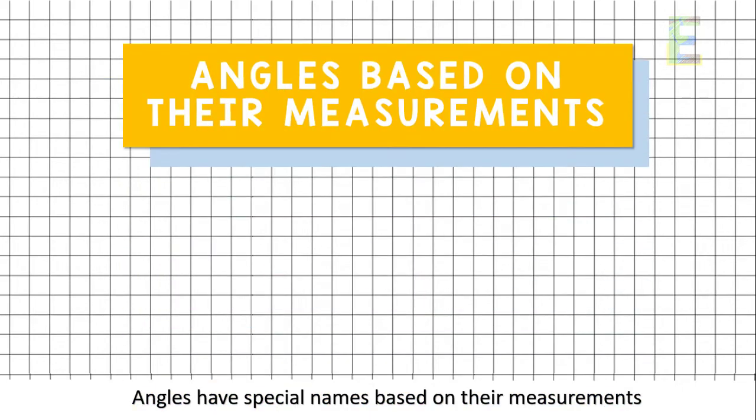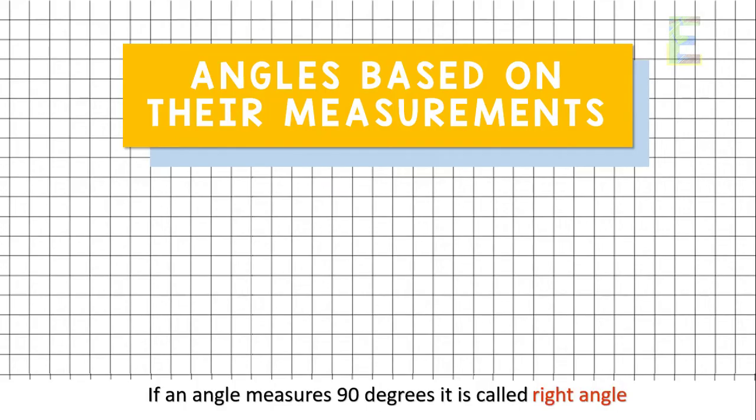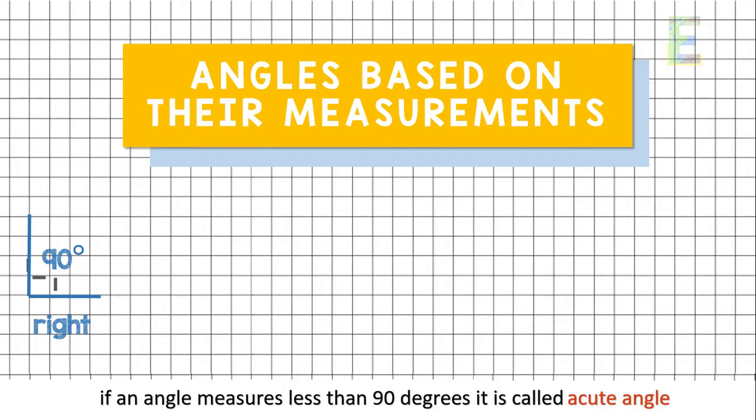Angles have special names based on their measurements. If an angle measures 90 degrees, it is called a right angle. If an angle measures less than 90 degrees, it is called an acute angle.